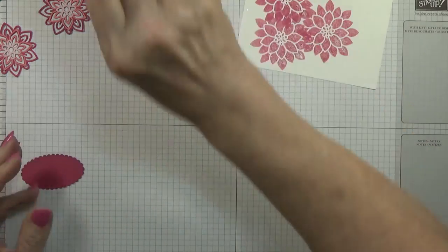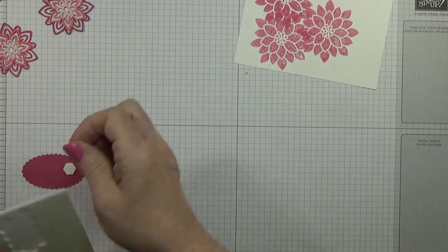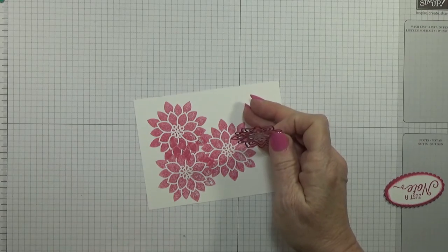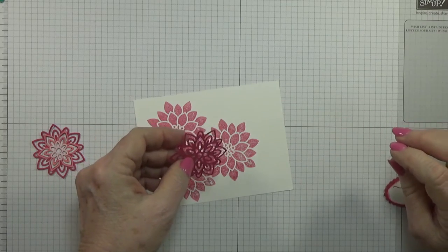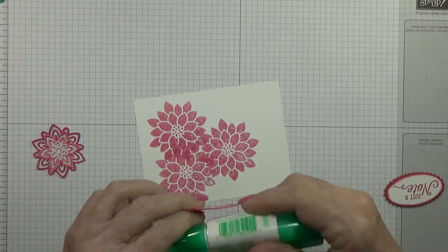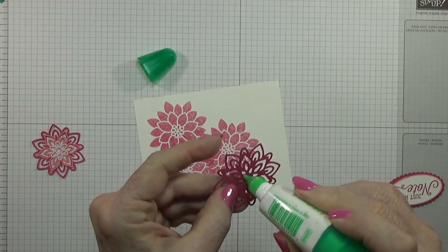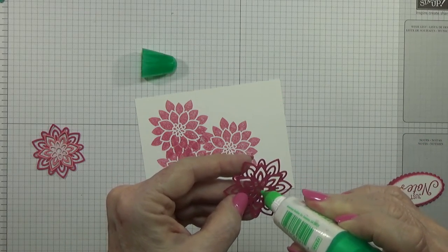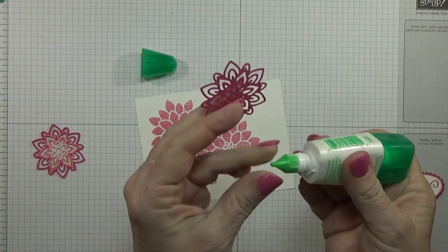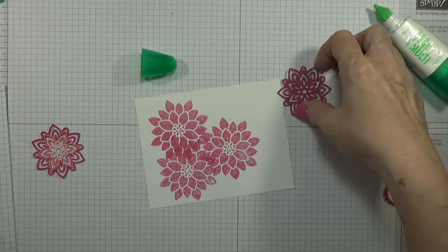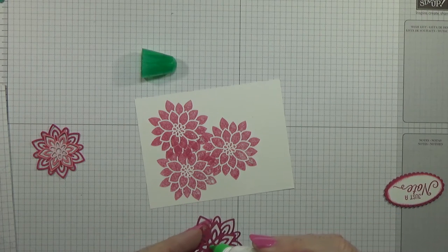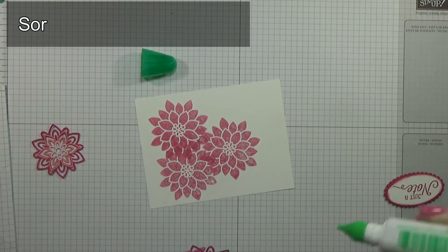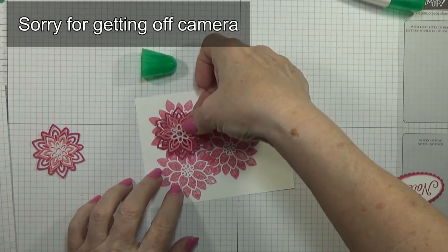Now I'm gonna go ahead and put the dimensionals on the back of this—it's the only thing that gets dimensionals on this card. You might hear my grandchildren every once in a while, they're here. I've already put these together so I'm going to go ahead and put some glue on this. I'm gonna put a little bit around the edge here. I had to unclog my glue, so let's go ahead and put a little bit of glue here and here, here, here, here, and here.